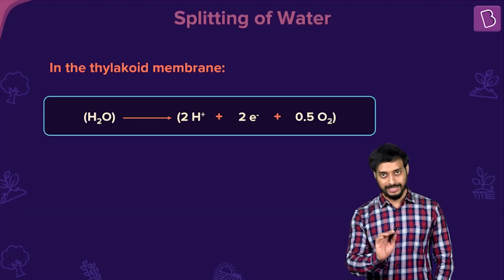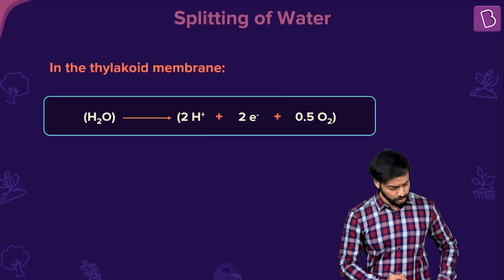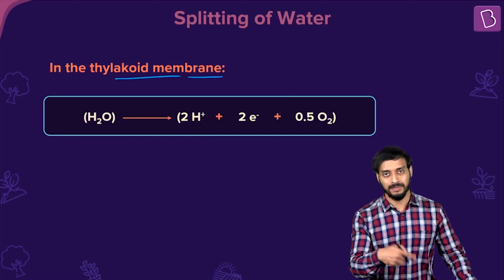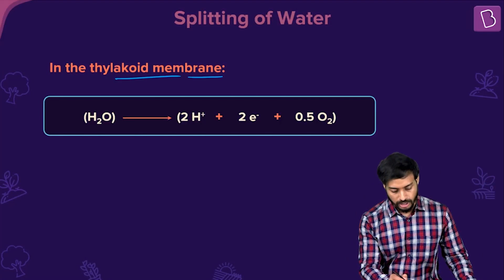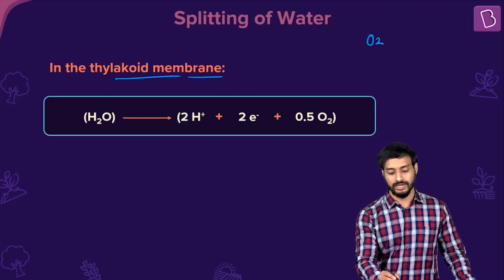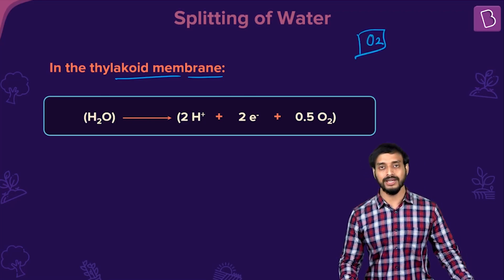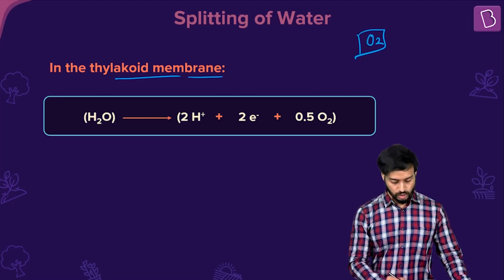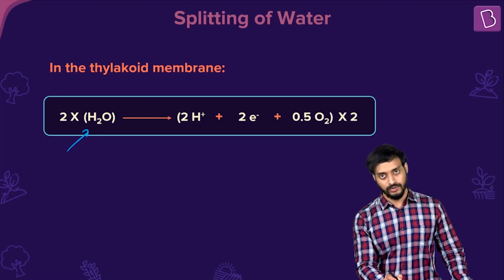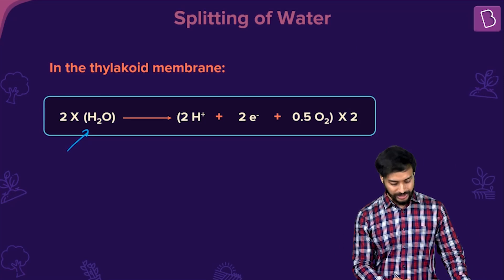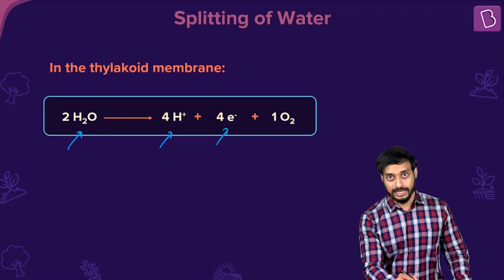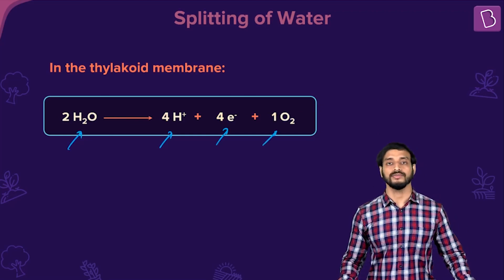The splitting of water occurs in the thylakoid membrane. The reaction is: H₂O splits into 2H⁺ + 2 electrons + ½O₂. Since we refer to oxygen as O₂, we balance the equation by using two water molecules, giving: 2H₂O → 4H⁺ + 4 electrons + 1 O₂ molecule. This is the balanced equation.